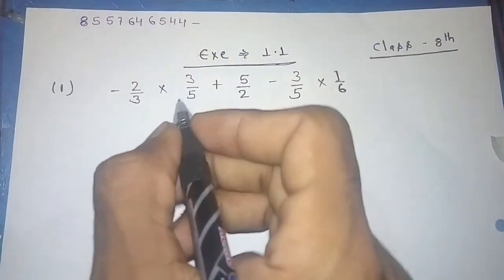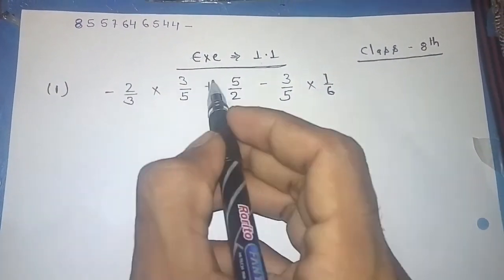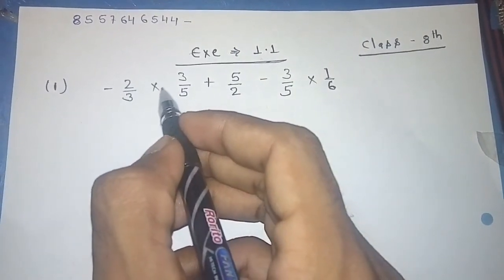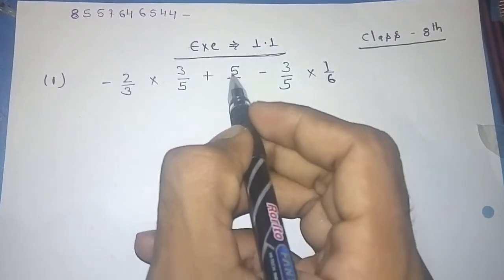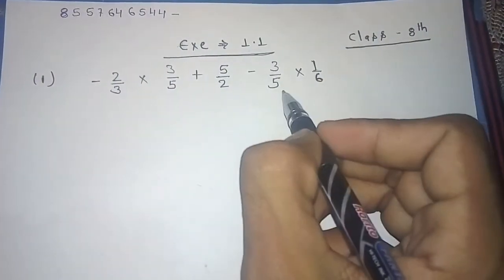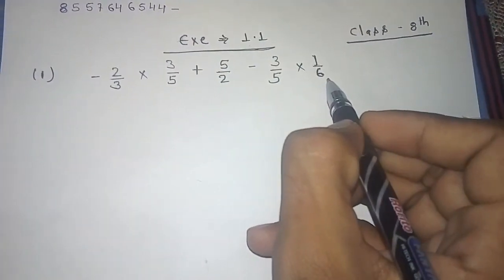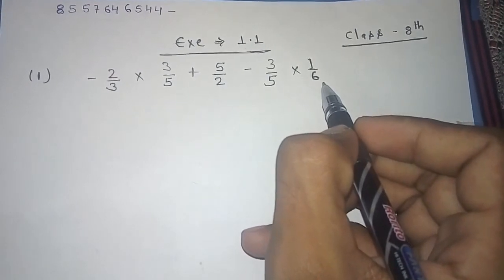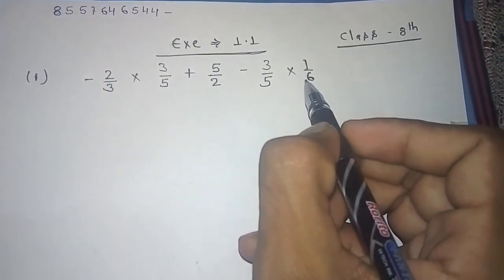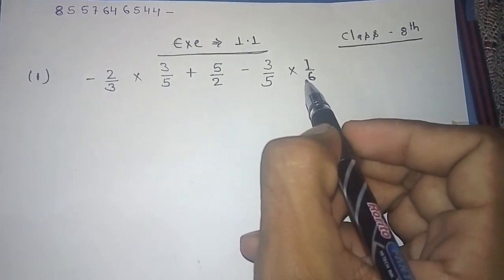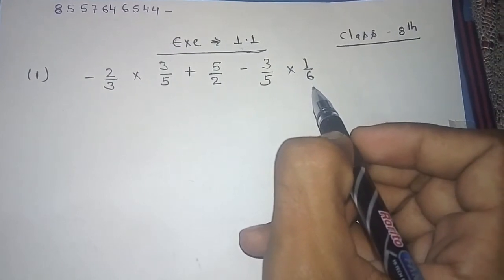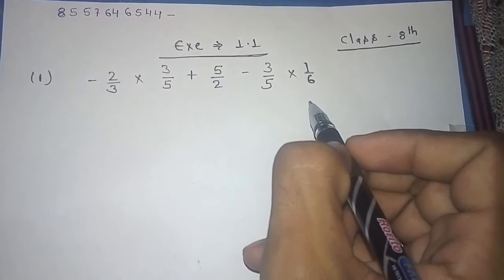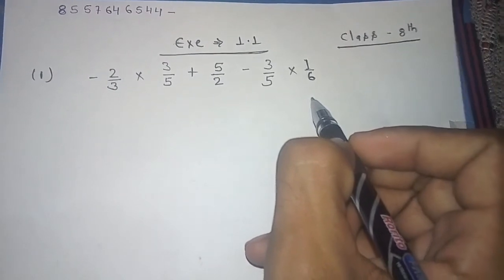The first question is: 2/3 minus (2/3 × 3/5) plus 5/2 minus (3/5 × 1/6). It's a very simple thing — we are going to apply the BODMAS rule here. BODMAS is a kind of rule which we are going to use.